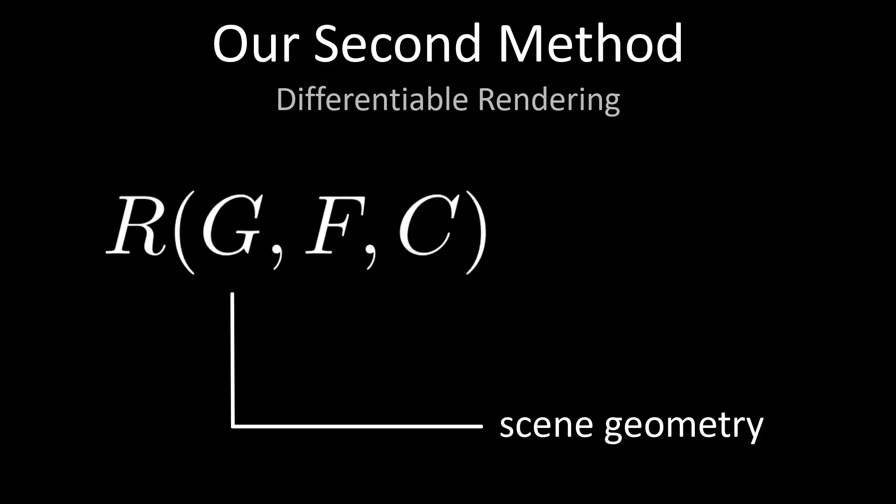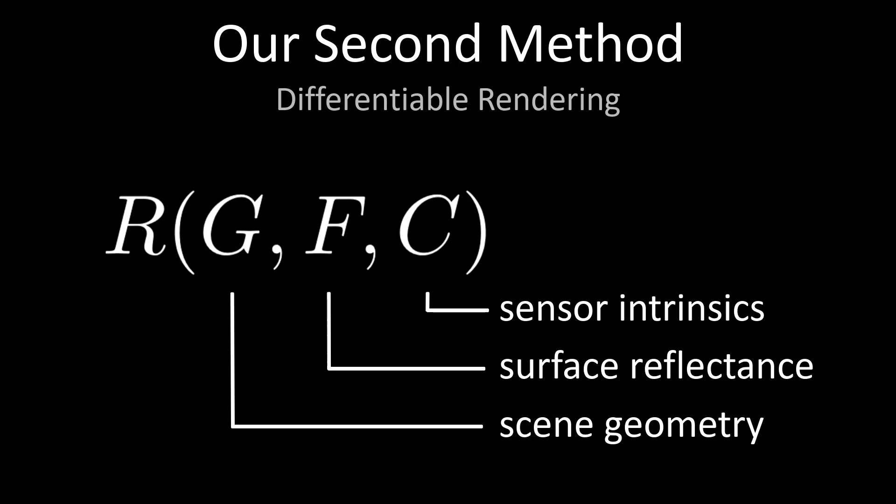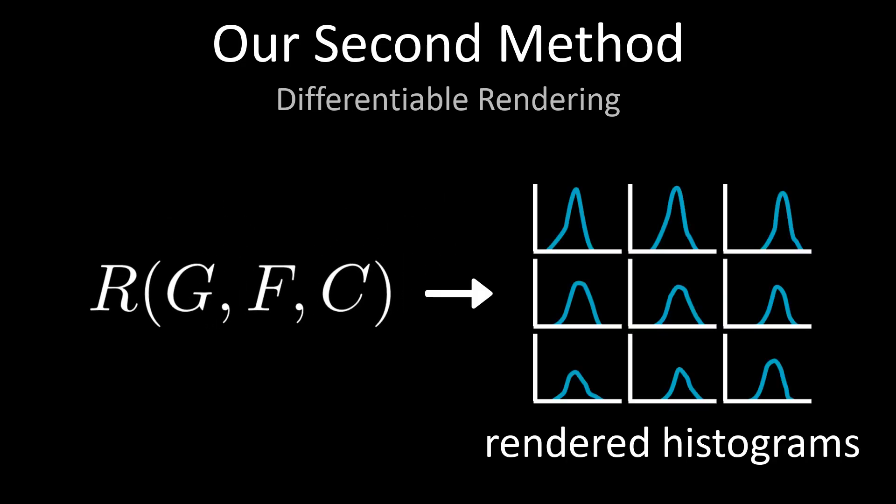At the core of our second method is a differentiable rendering pipeline. This pipeline implements a render function which takes as input scene geometry, which is simply the three degrees of freedom of the planar surface, surface reflectance parameters which describe the specularity and albedo of the plane, and sensor intrinsics such as the field of view specification and the number of bins in each transient histogram. The output of this function is an array of 3x3 transient histograms which we expect to be captured by the sensor given the inputs.